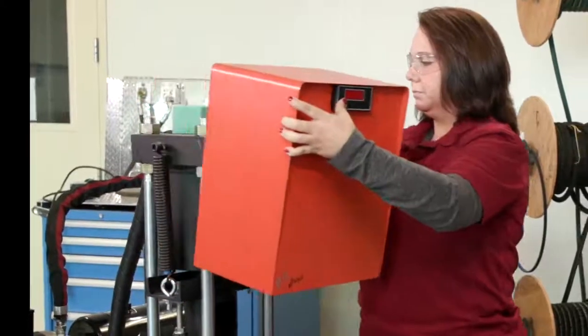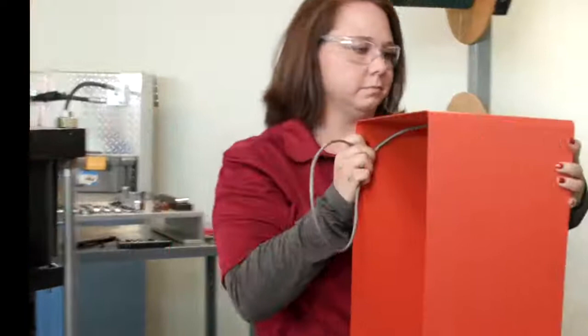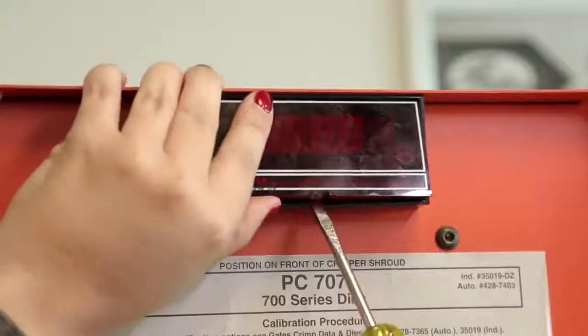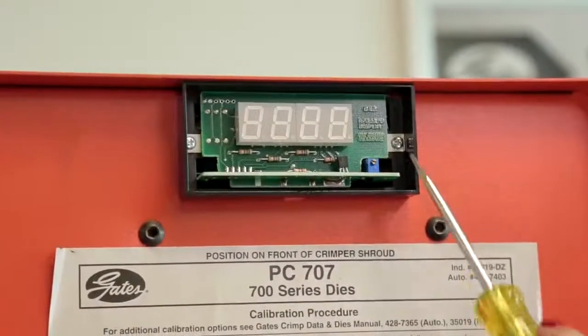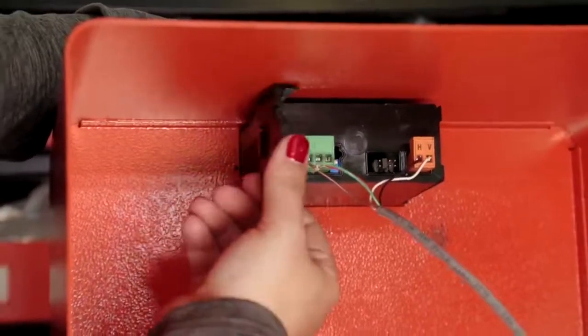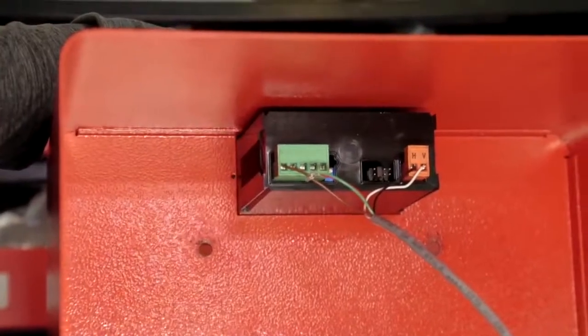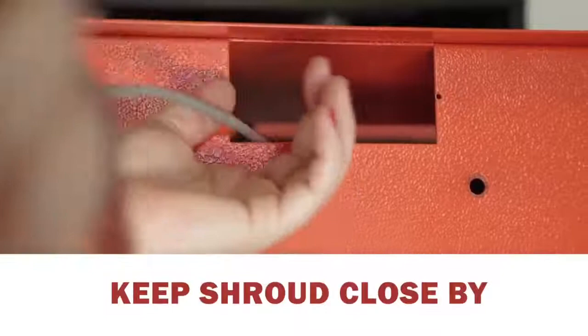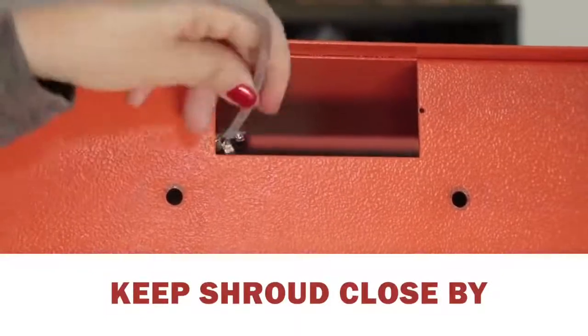Check for zip ties. Remove the shroud from the crimper and then remove the digital display. Depending on your PC-707 model, you may need to pop off the red screen and remove two screws, or on a different model, you might simply release the clips from the back of the shroud. Once you withdraw the display unit, keep the shroud close by as you'll reinstall that later.